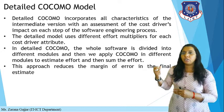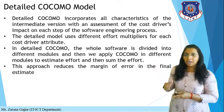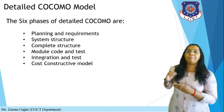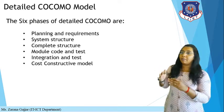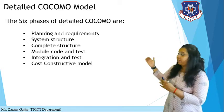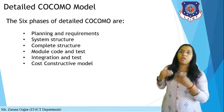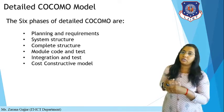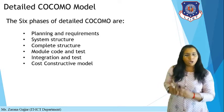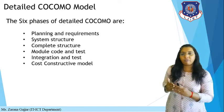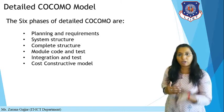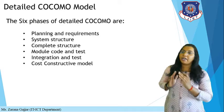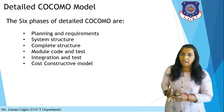This approach reduces the margin of error in the final estimate. The six phases for detailed COCOMO are: planning and requirement, system design, complete design, module code and test, integration and test, and the constructive cost model phase. All 15 parameters are applied in each phase and each module, and then the grand total cost estimation is calculated.